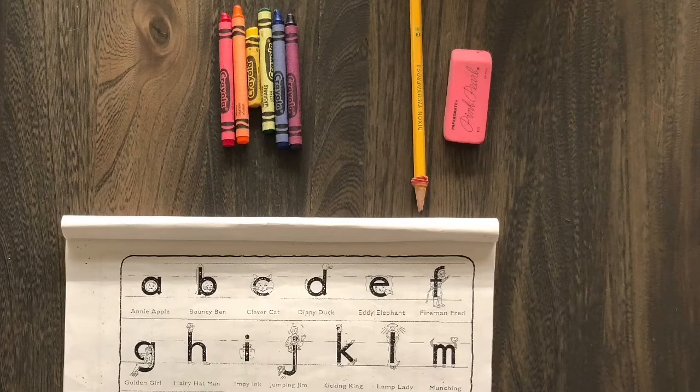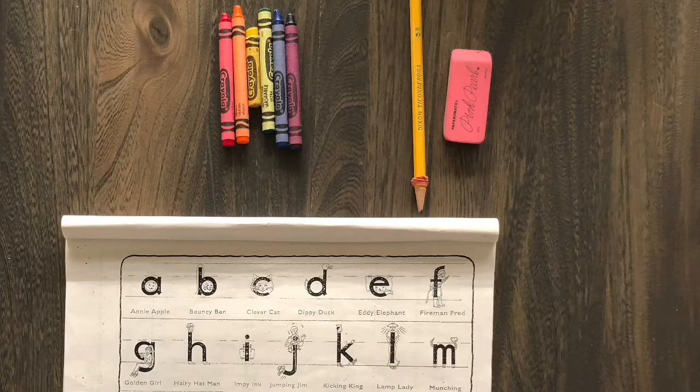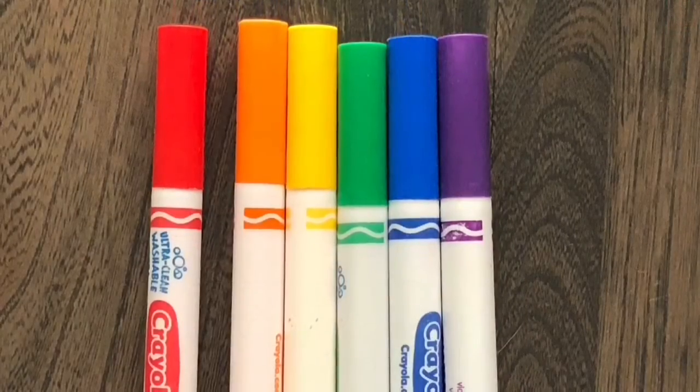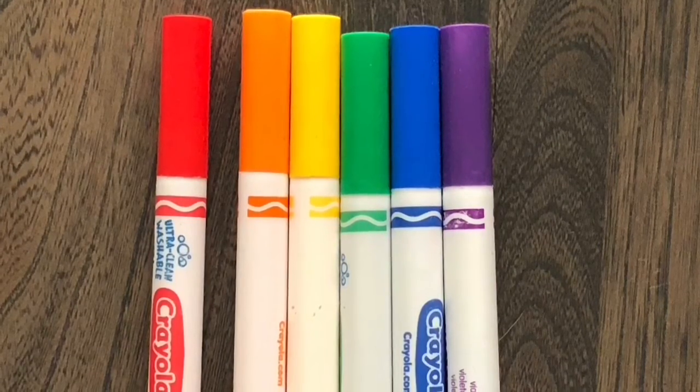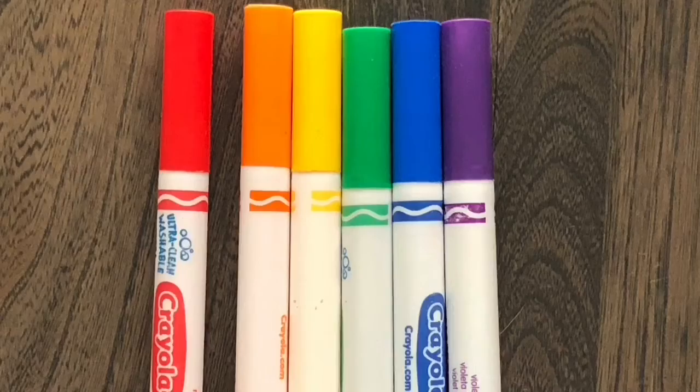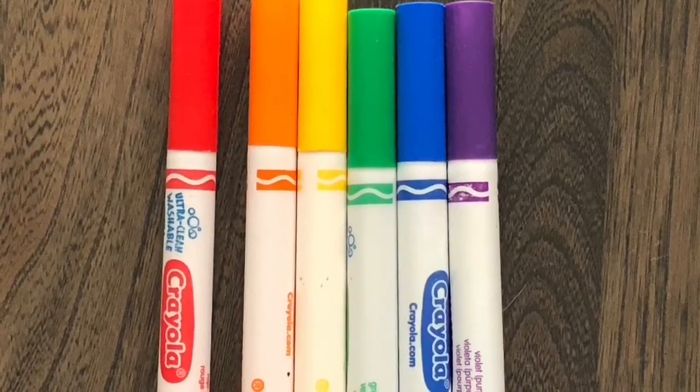When we get started, you need to set up your writing supplies. You'll need your handwriting book, your pencil, your eraser, and your colors. We'll be using the colors red, orange, yellow, green, blue, and purple. They're rainbow colors. You can pause the video and get them set up now.